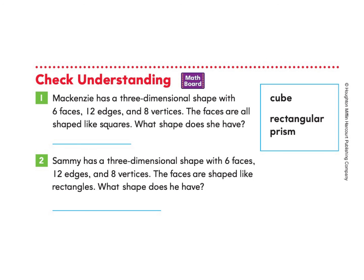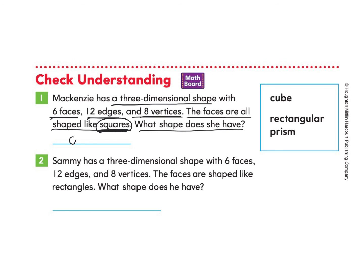Now we're ready for Check Understanding, part one. Mackenzie has a three-dimensional shape with six faces, 12 edges, and eight vertices, and the faces are all shaped like squares. What shape does she have — cube or rectangular prism? We know that when a three-dimensional shape has six faces, 12 edges, and eight vertices and they all look like squares, that is a cube.